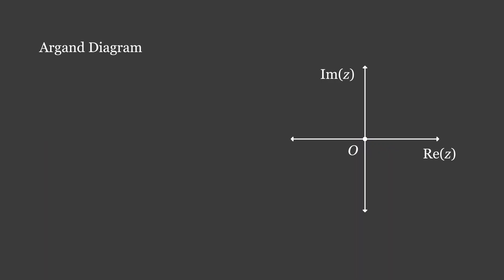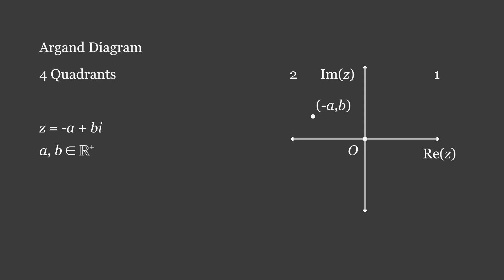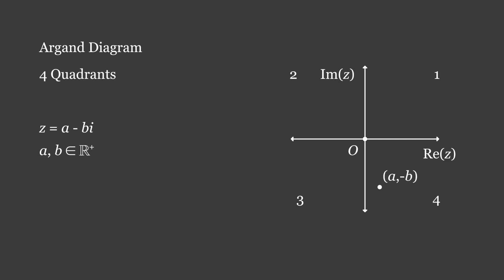The Argand diagram is easily divided into four quadrants. I have plotted an arbitrary complex number z equals a plus bi, where a and b are both positive, in the first quadrant. In the second quadrant, z equals negative a plus bi. In the third quadrant, z equals negative a minus bi. And in the fourth quadrant, z equals a minus bi. The quadrants are counted anticlockwise from the positive side of the real axis.